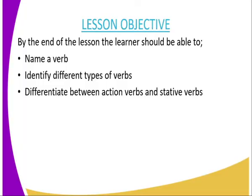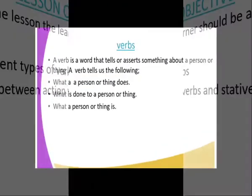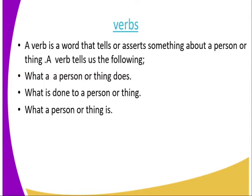By the end of the lesson, you as a learner should be able to name a verb, identify the different types of verbs, and differentiate between two types of verbs — action verbs and stative verbs. We'll begin with the definition of verbs. A verb is a word that tells or asserts something about a person or a thing.